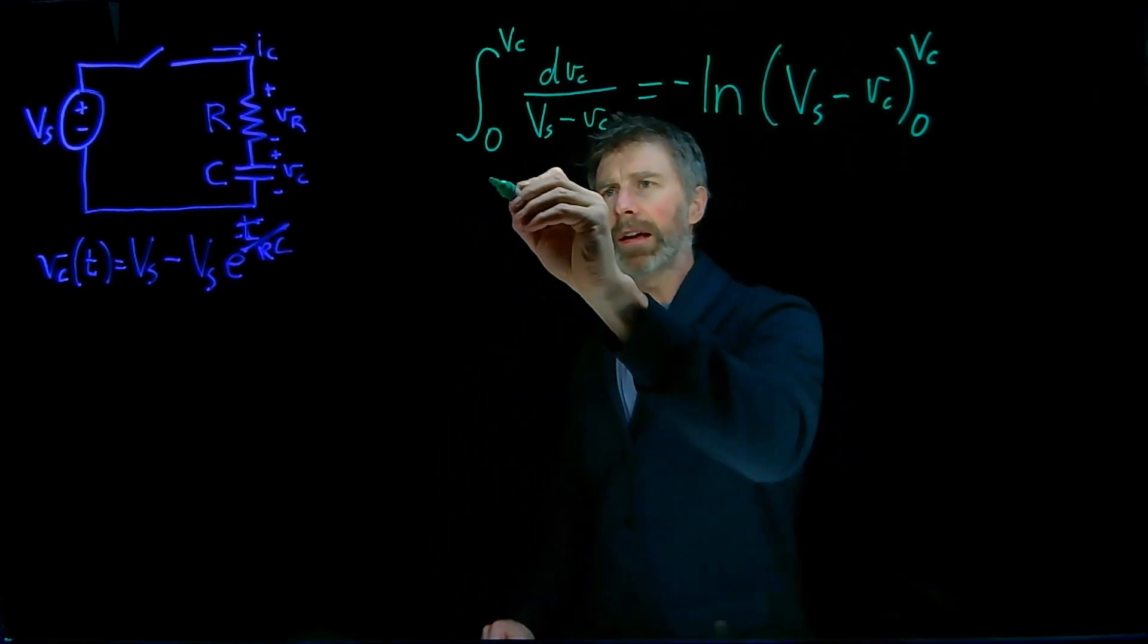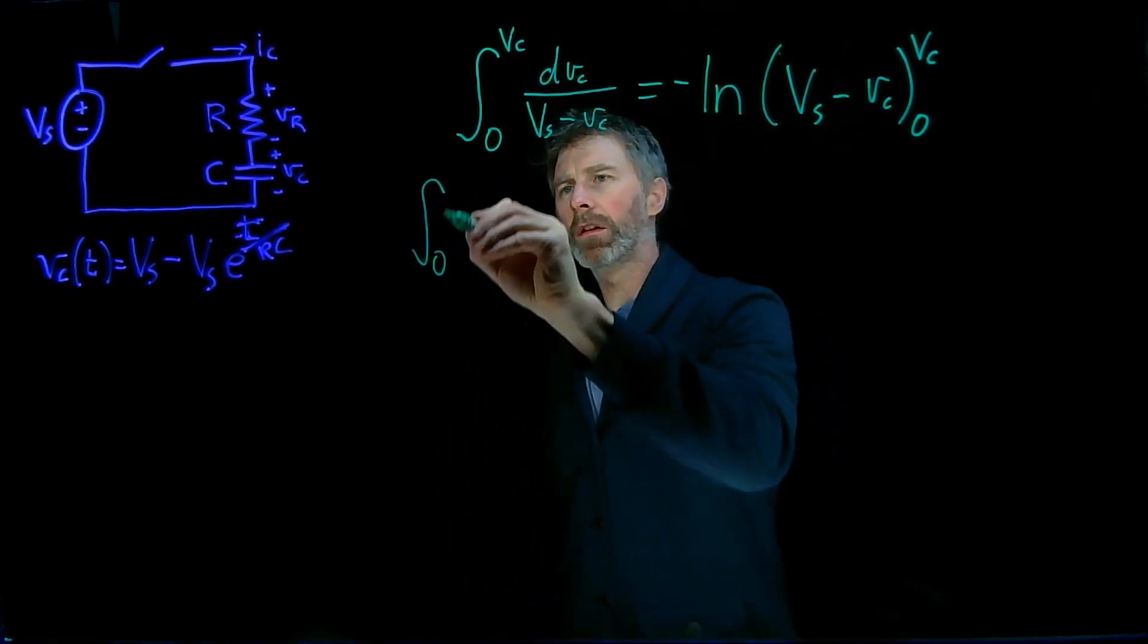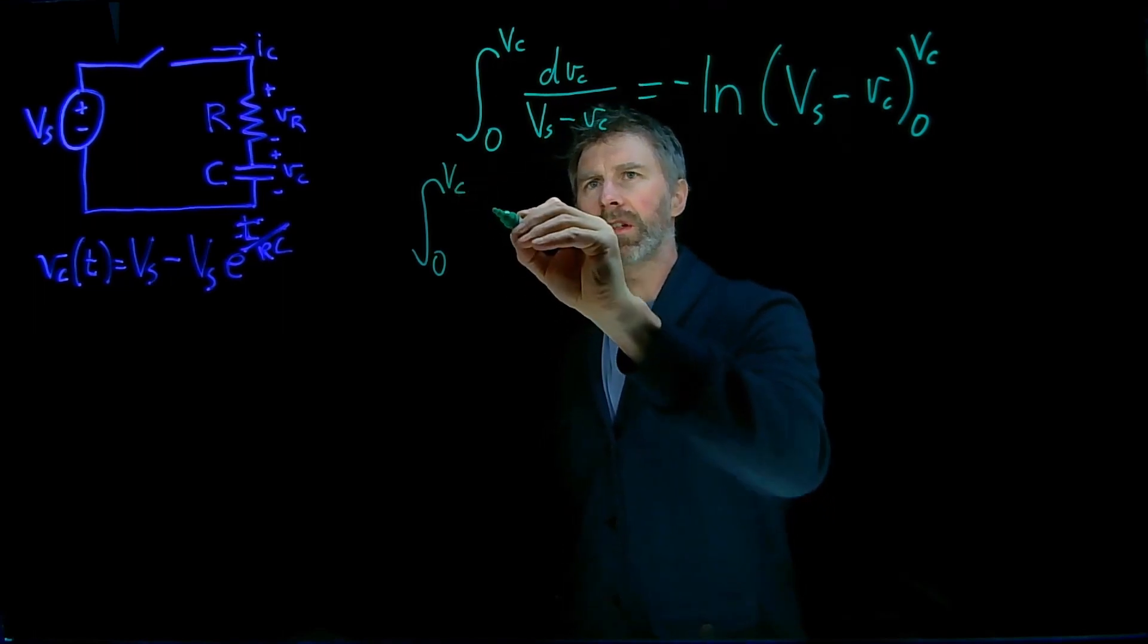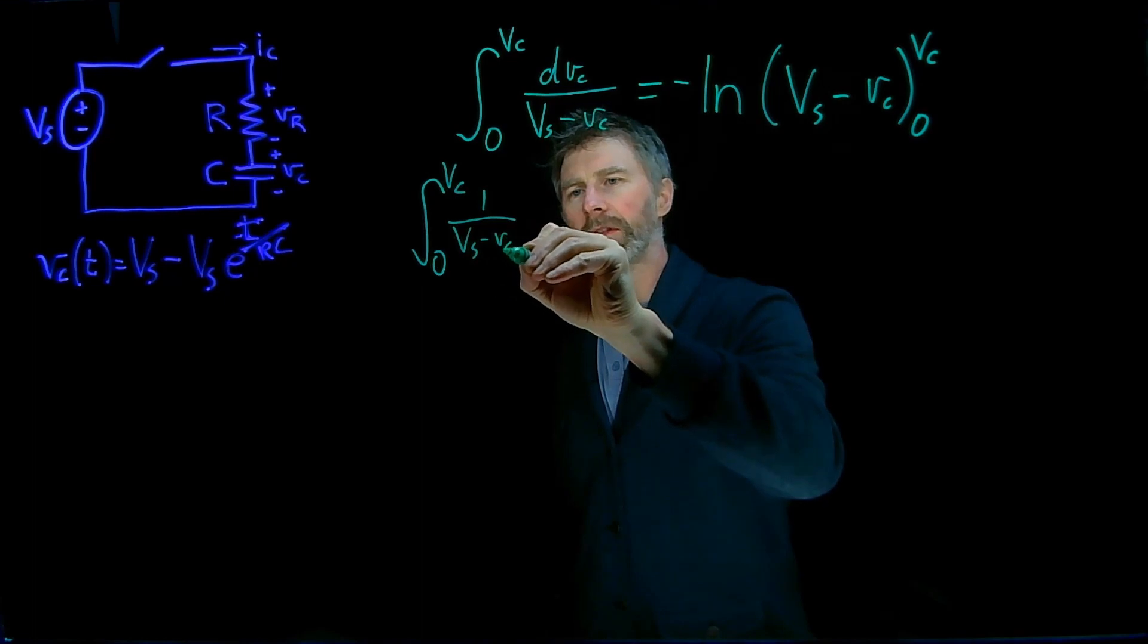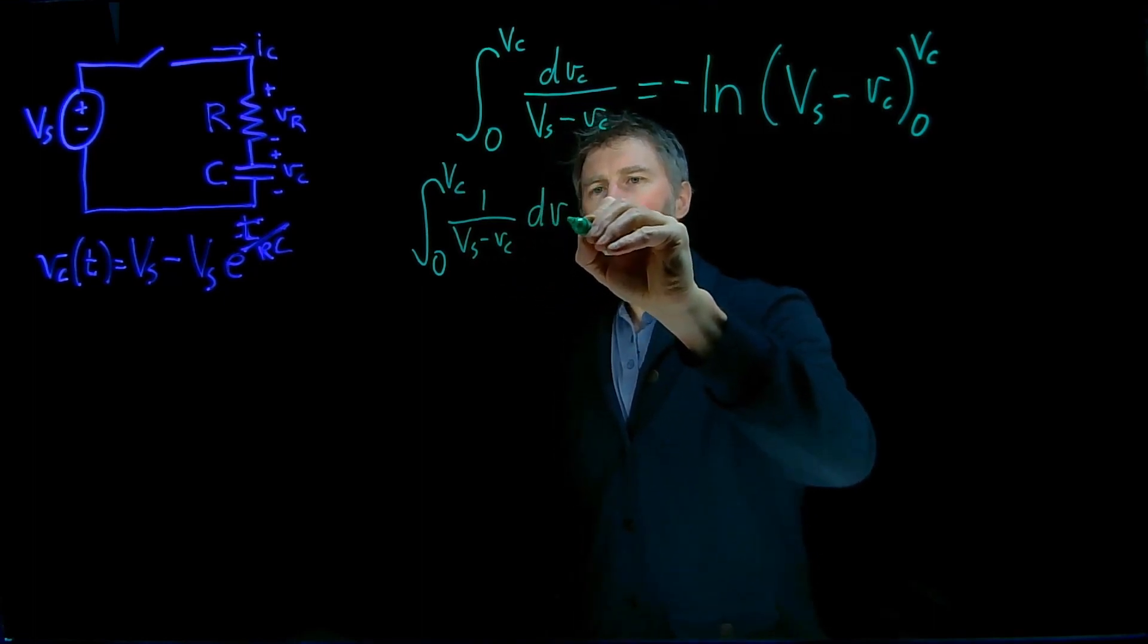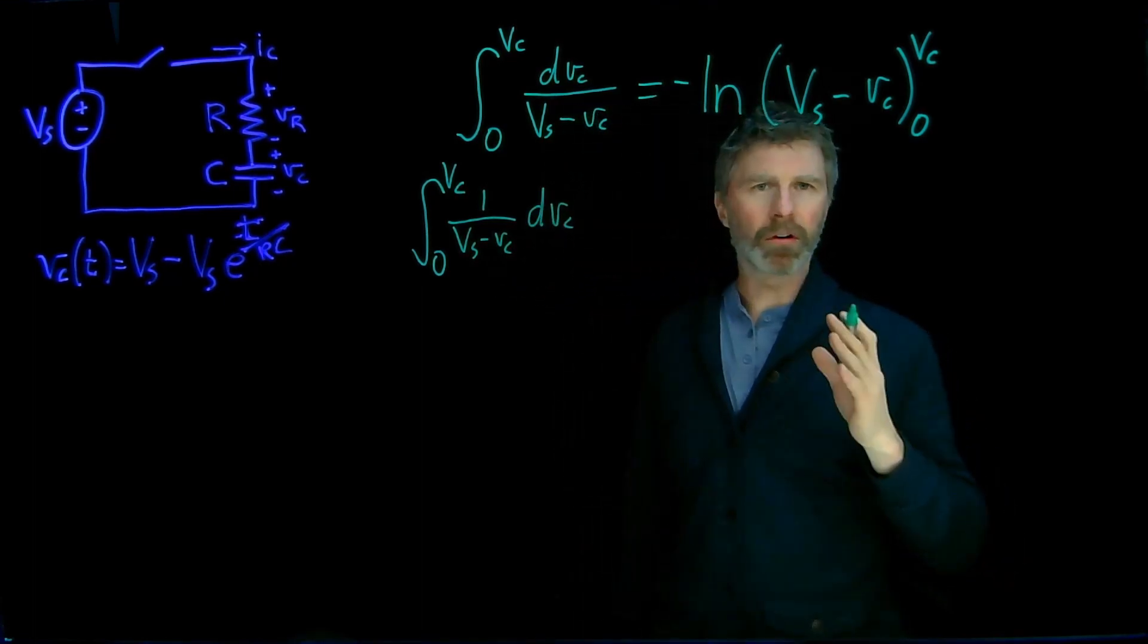Well, I'm going to rewrite this as integral from 0 to Vc of 1 over Vs minus Vc dVc. Okay, we're going to use substitution.